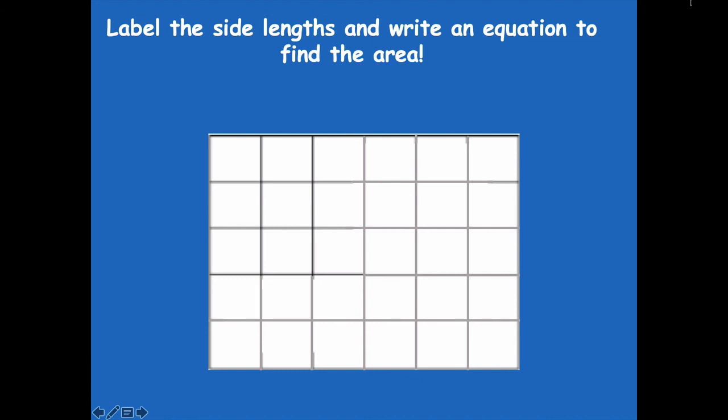Okay, so side lengths are five centimeters because there's five tiles. The bottom is six centimeters because there are six tiles. And an equation to match that would be five centimeters times six centimeters equals thirty square centimeters. You got to remember that square because we're finding the area as we're multiplying those two side lengths.